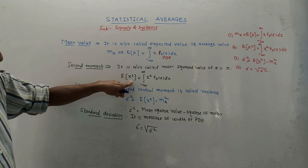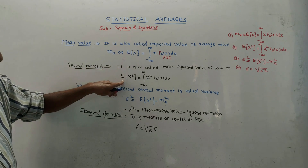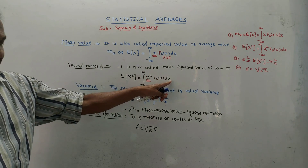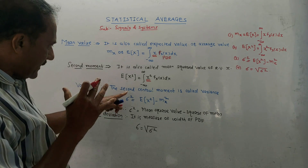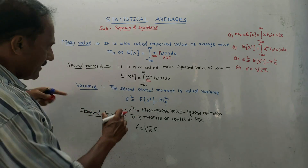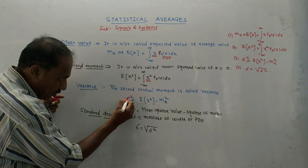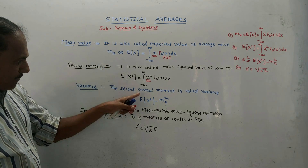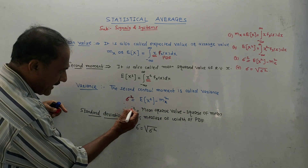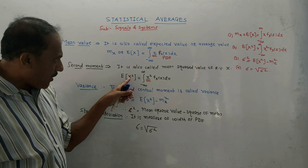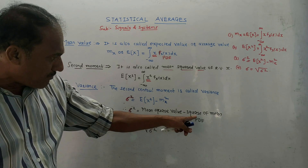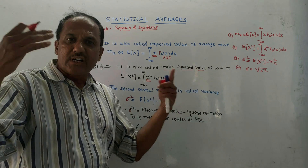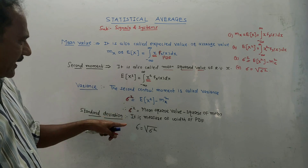Second moment notation is E of x square. Sigma square equals E of x square minus mx square — that is mean square value minus square of mean. This is the variance, denoted sigma square. The last parameter is standard deviation, which measures the width of the PDF curve. It is the square root of variance, that is square root of sigma square.